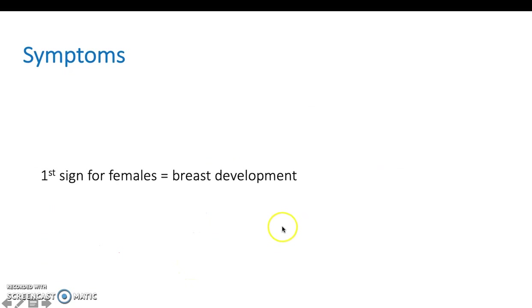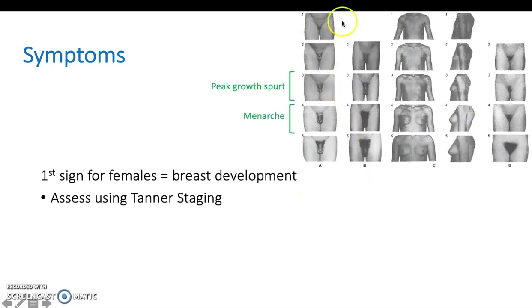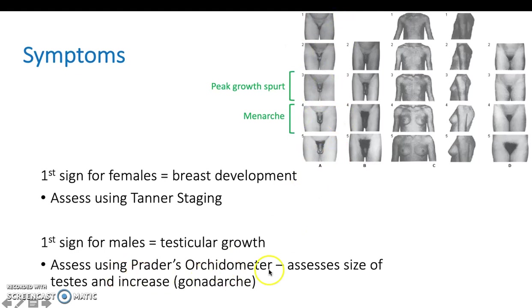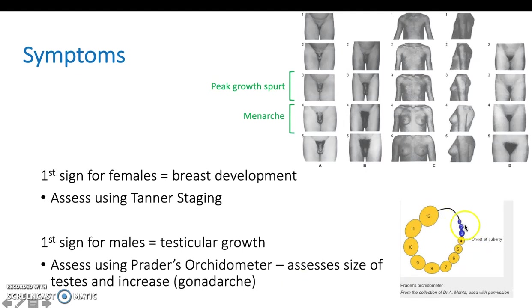The first sign for females is breast development, and you want to assess that using Tanner staging. The Tanner stages are shown here for both males and females — each step represents where you'd stage the child, covering breast development and pubic hair growth in girls. For males, the first sign is testicular growth. You assess this using Prader's orchidometer, measuring the size of the testes. Onset of puberty in males is generally when testicular size is around 4 ml on the orchidometer.